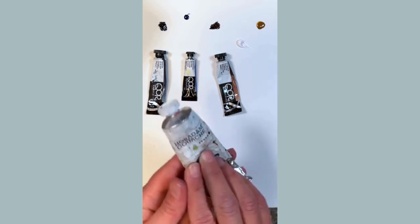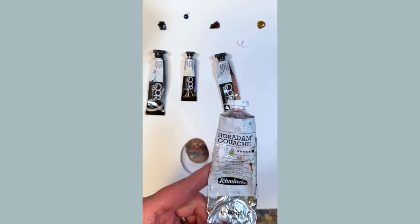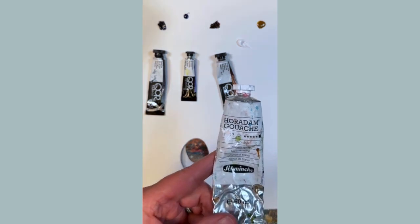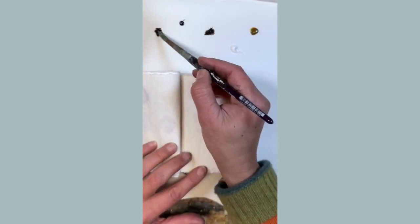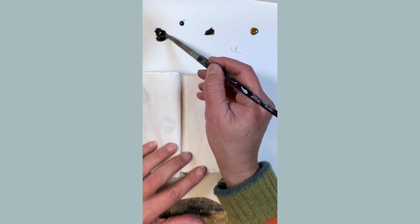So I'm mixing, I'm using Payne's Grey, Ultramarine Blue, Van Dyke Brown, Nickel Azo Yellow and Hollidam Gouache white, it's titanium gouache white.